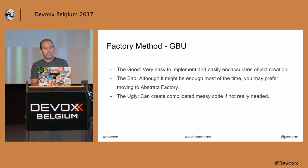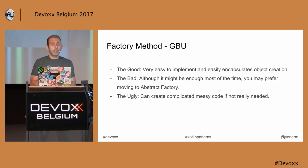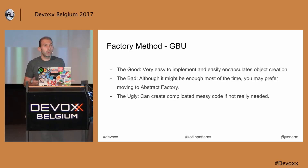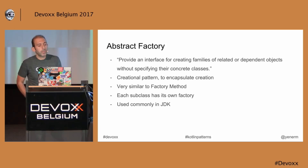The good, the bad, the ugly: factory methods are very easy to implement and very efficient in encapsulating object creation. The bad part is that, although it might be enough most of the time, you may prefer to move to Abstract Factory if things get a little bit complicated. The ugly part is it may create complicated method code if you don't really need it and just put it in to show off.